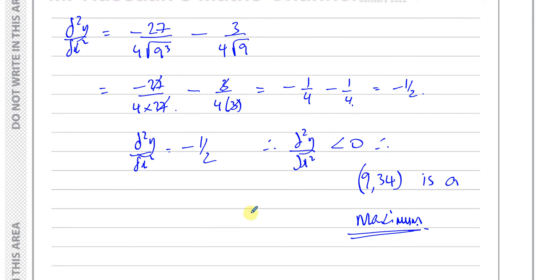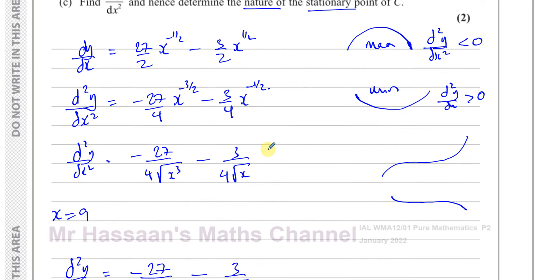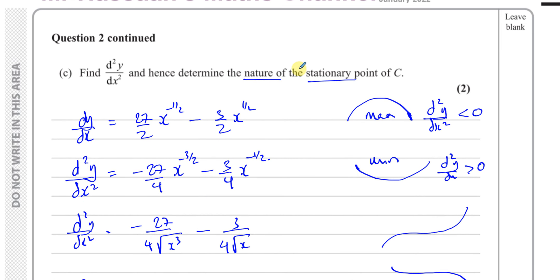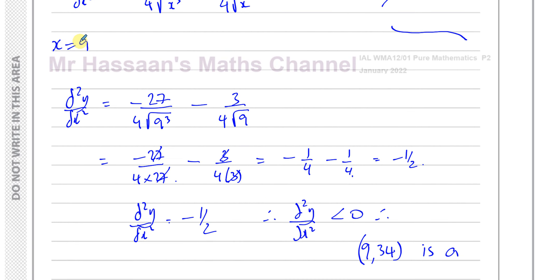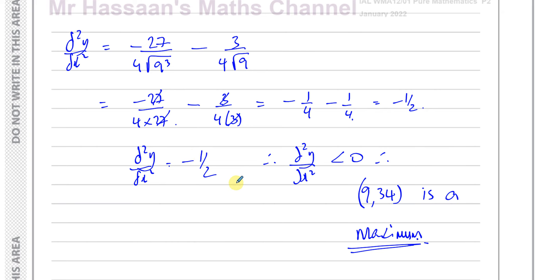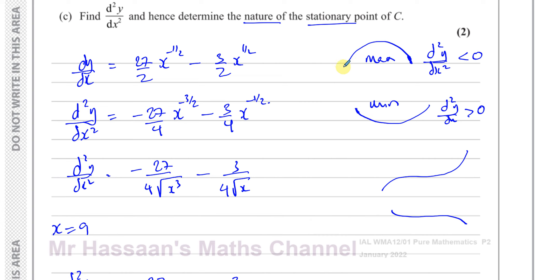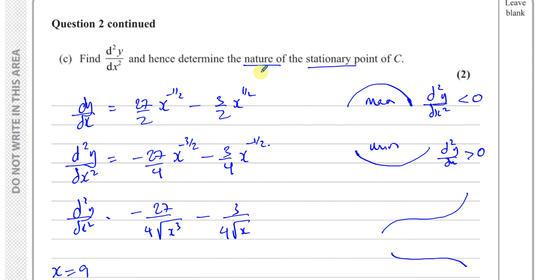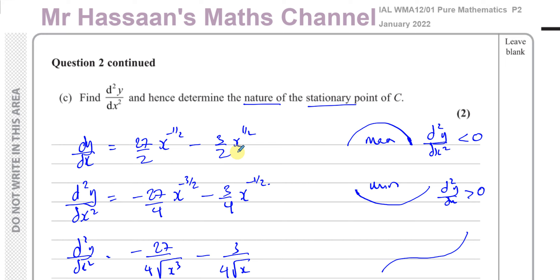Because d²y/dx² was negative, this confirms a maximum — the gradient is decreasing from positive to negative. If it had been positive, we would have a minimum. That concludes question number two. Other questions from this January 2022 paper can be found in the playlist shown on screen, along with differentiation P2 playlists. You can also subscribe to the channel by clicking the link. Thank you for watching and see you soon.